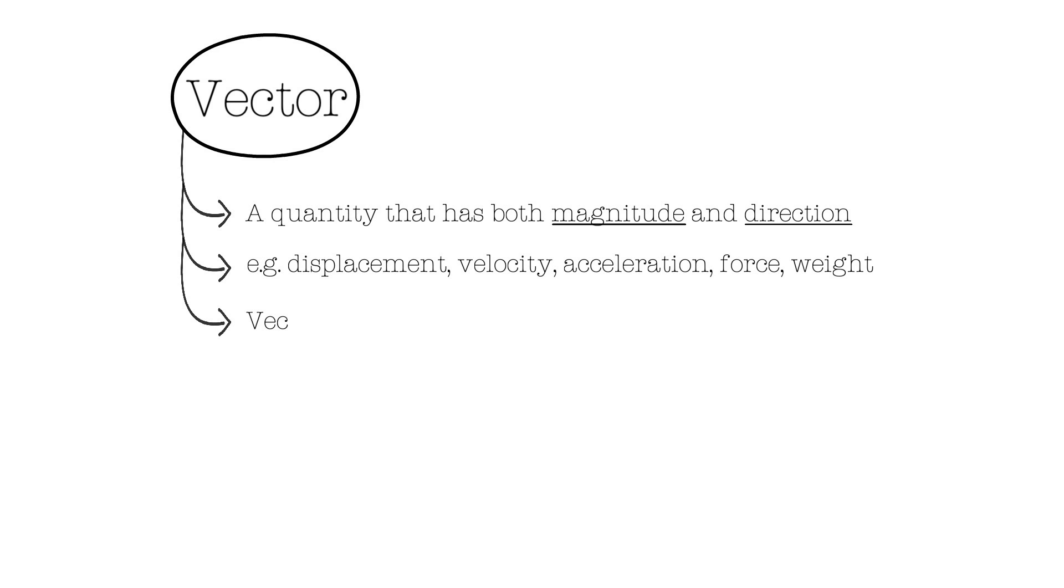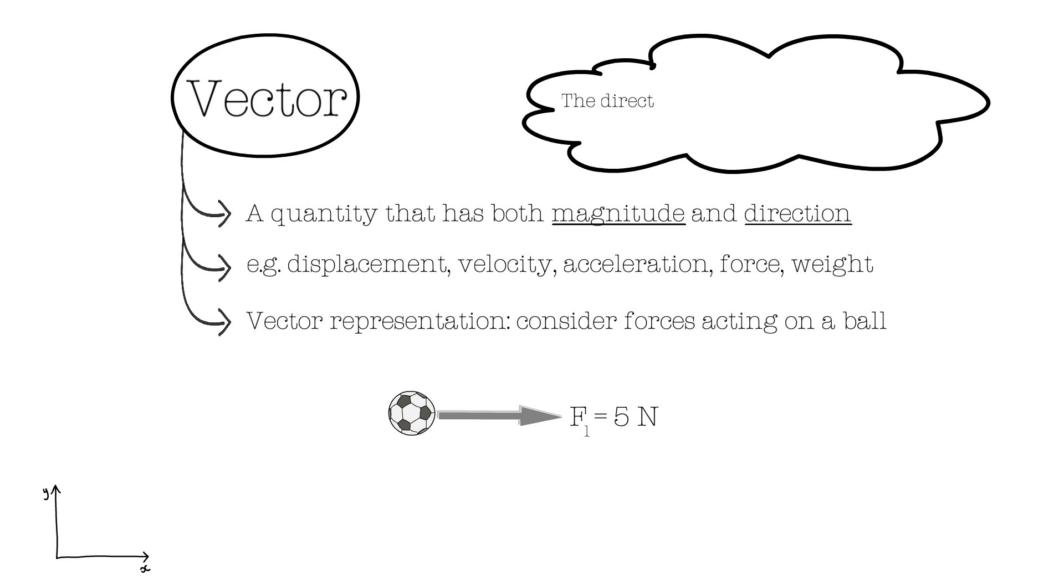Let's represent a vector quantity by considering the forces that are acting on a ball. Here is an example. We can see the force F1 of 5 Newtons acting on a ball. The direction is represented by the arrowhead and the magnitude by the length. So, the ball is currently moving to the right.